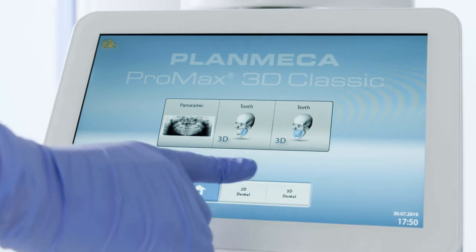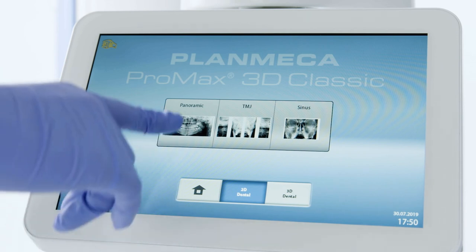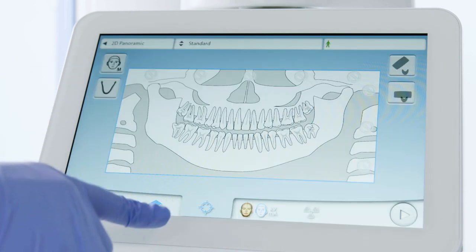Peri-apical setup: To capture a segmented PA-like view, select 2D dental, then panoramic from the touchpad of your Pro Max X-ray unit. To isolate the desired region of interest, select the radiation symbols.